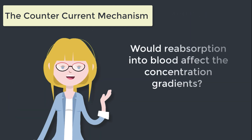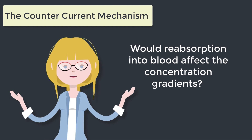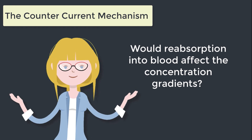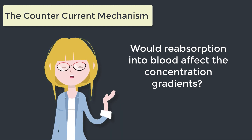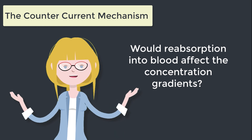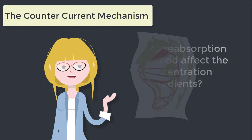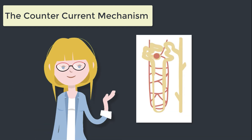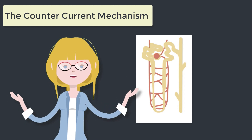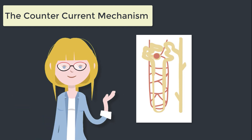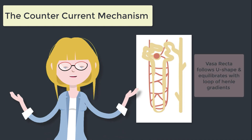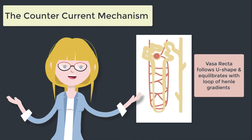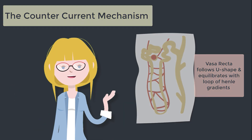You might wonder: if water is being reabsorbed, there must be blood vessels here too — and wouldn't blood vessels sabotage this whole situation? Here in the loop of Henle, the blood vessels by design also follow a U-shaped configuration. These capillaries are known as the vasa recta, and by following the shape of the loop of Henle, they do not interfere with these concentration gradients.